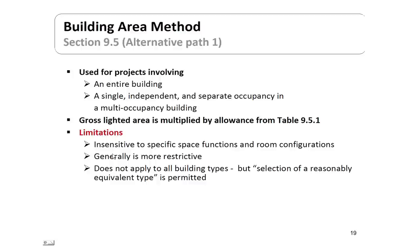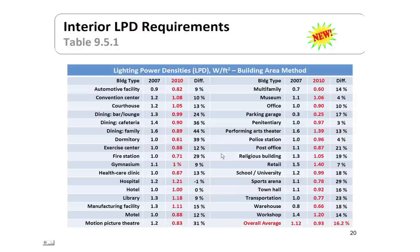The limitation of the building area method is that it is insensitive to specific space functions and is generally a little more restrictive. It does not apply to all building types, but if you can select a reasonably equivalent building type, it is still permitted as an alternative compliance route. There are 33 or 34 building types listed, starting with automotive facility and going through workshops.